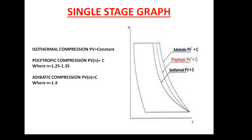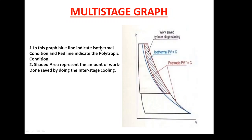Now let's first talk about multi-stage and how it overcomes the problems of single-stage. Let's see the multi-stage graph. In multi-stage, as I have told you in my earlier video about isothermal, polytropic, and adiabatic compression — the polytropic process is the process which basically occurs in a compression cycle. Our main aim is to achieve an isothermal compression graph, because isothermal compression indicates that the amount of work done will be minimum.